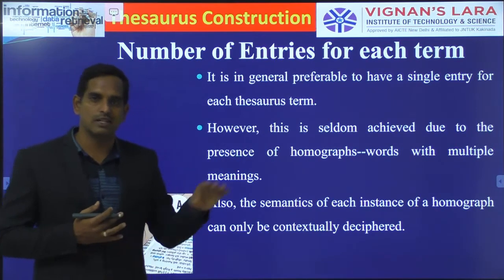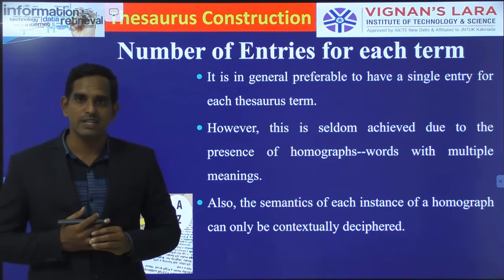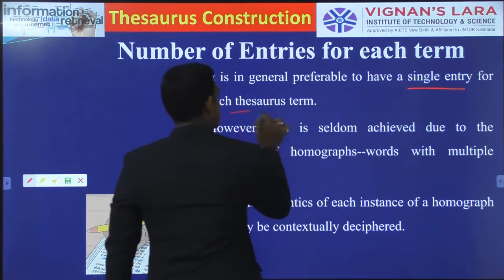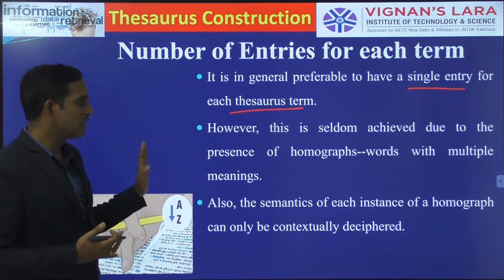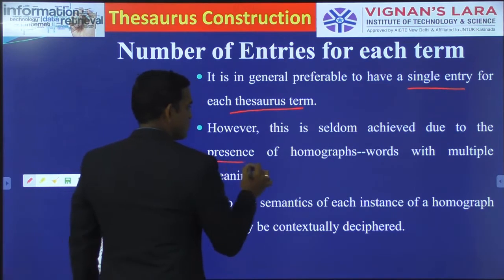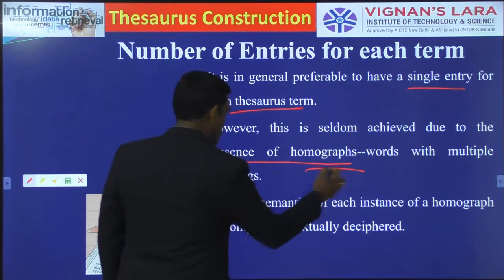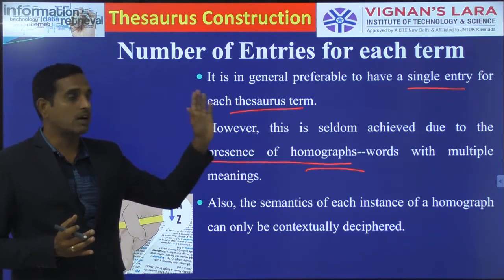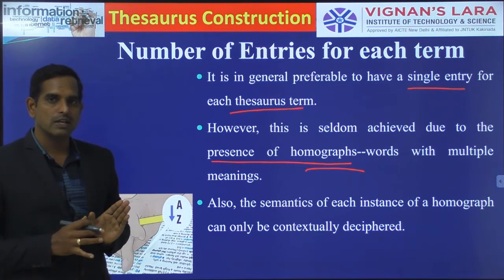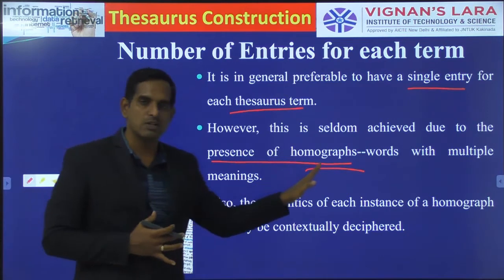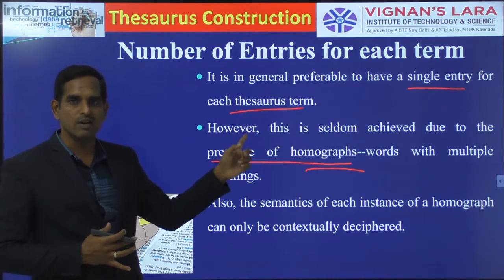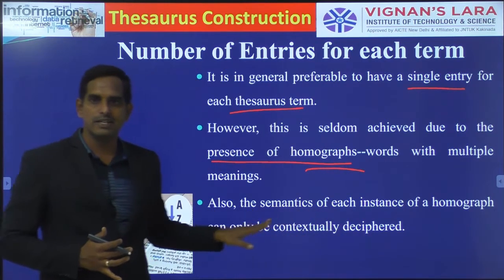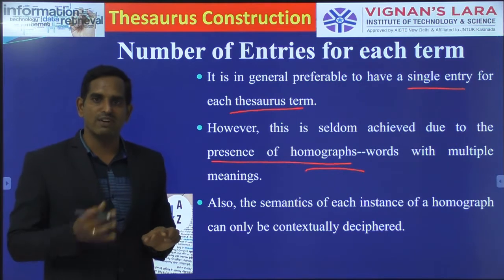The next feature is the number of entries for each term. It is generally preferable to have a single entry for one thesaurus term. However, this is seldom possible due to the presence of homographs — words with multiple meanings. If you are having such words, constructing one entry for each term will not be possible. The semantics of each instance of a homograph can also be conceptually different, varying for each meaning.